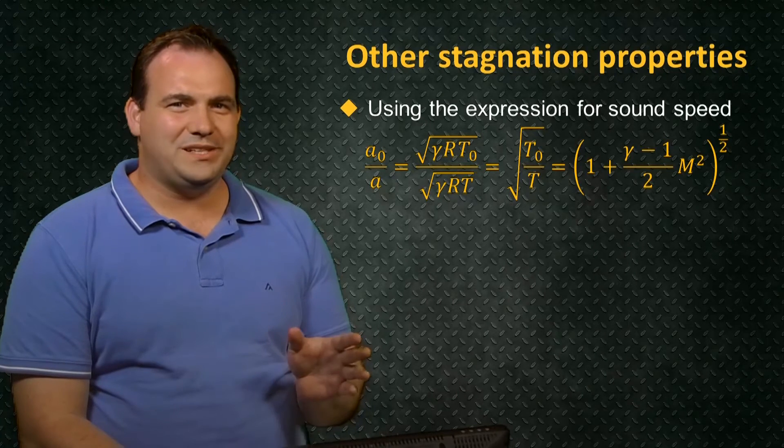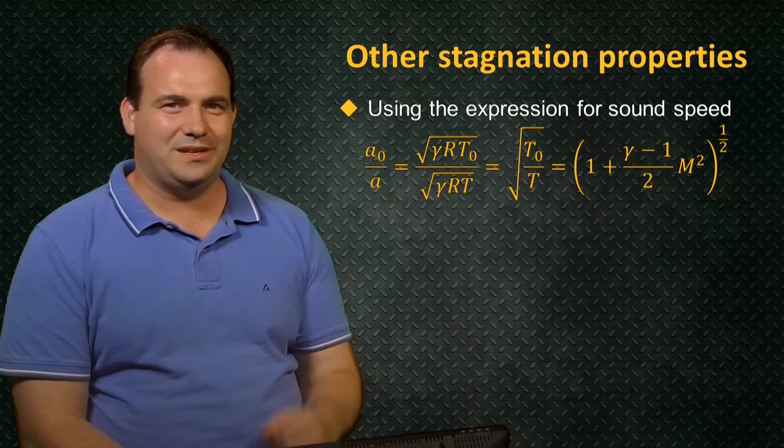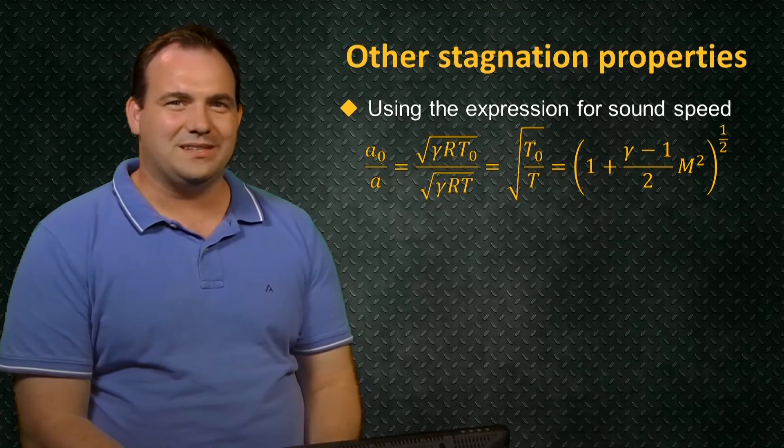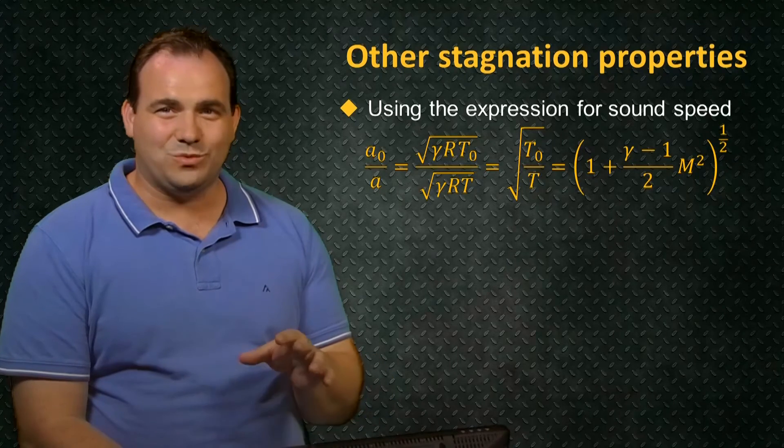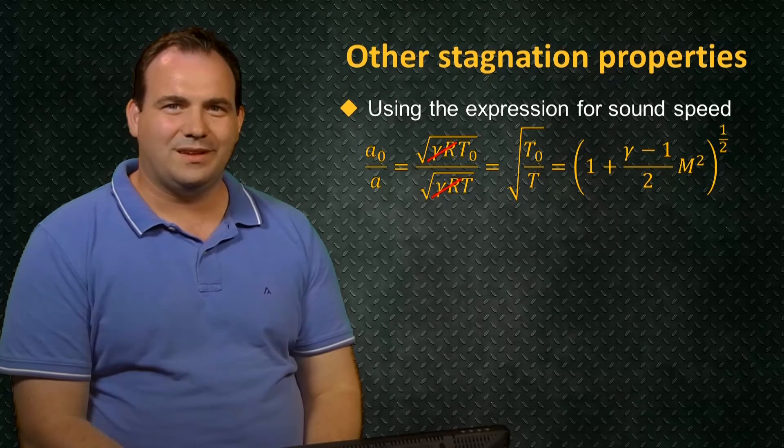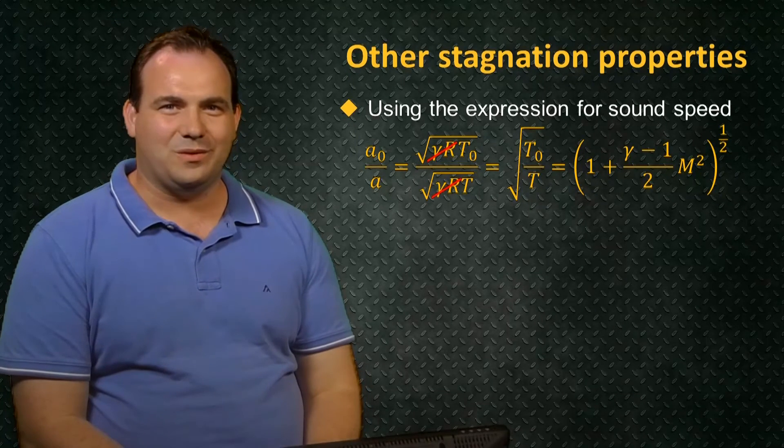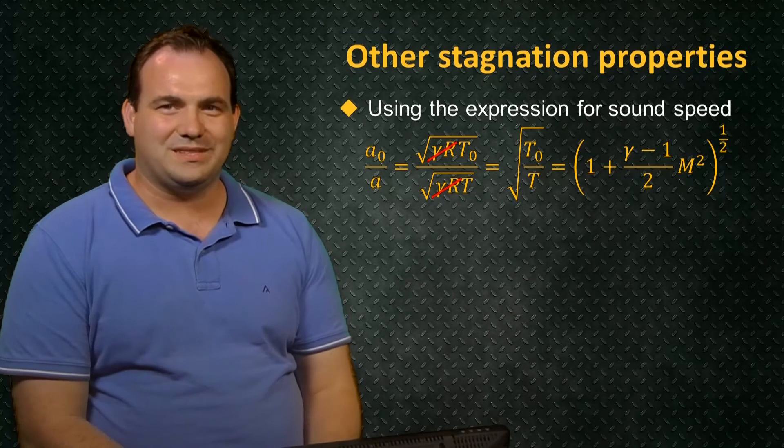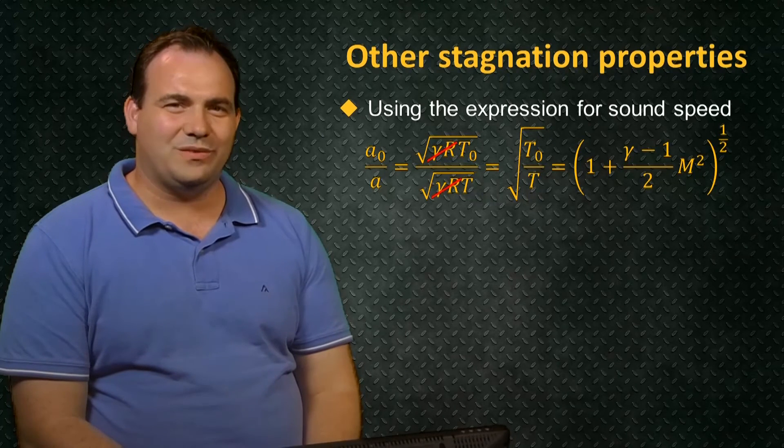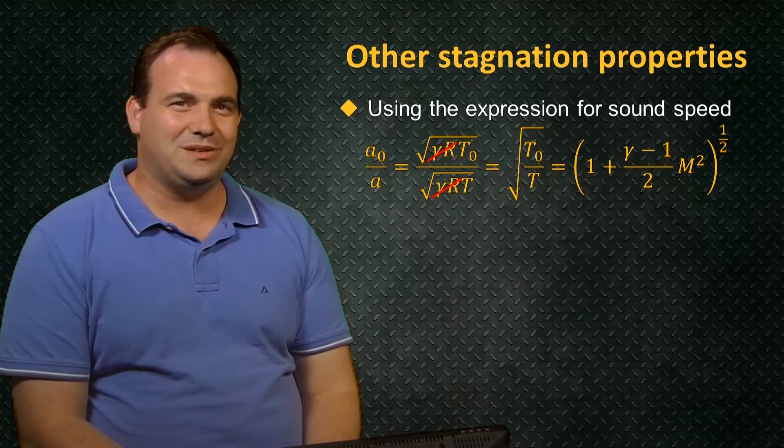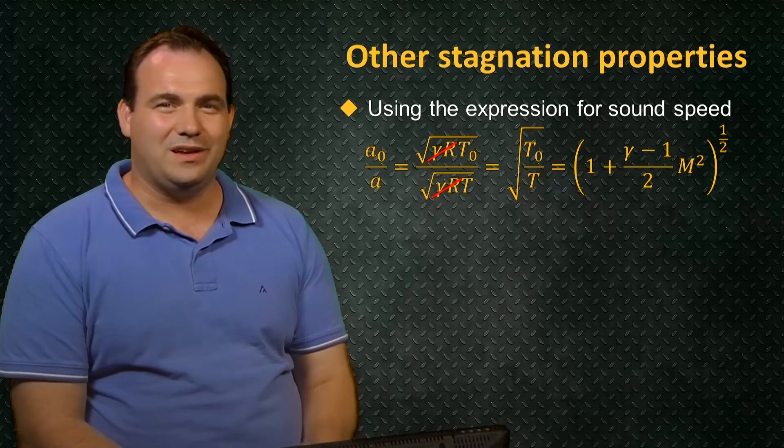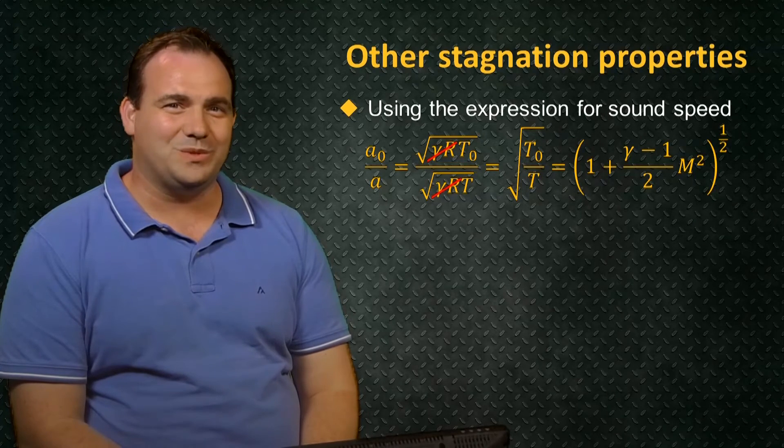We can find the ratio of the stagnation sound speed, A0, to its present value, A, just by expressing both sound speeds as the square root of gamma R times the relevant temperature. The root gamma R's cancel, and all we're left with is the square root of the ratio of the stagnation to static temperature. Using our expression for T0 over T once again from the last unit, we found that A0 over A is equal to the square root of 1 plus gamma minus 1 over 2 times the Mach number squared.